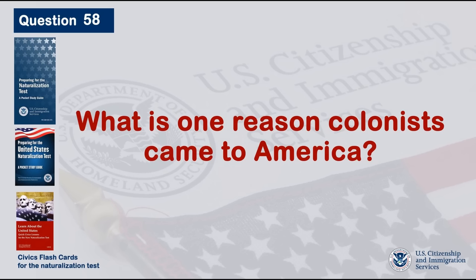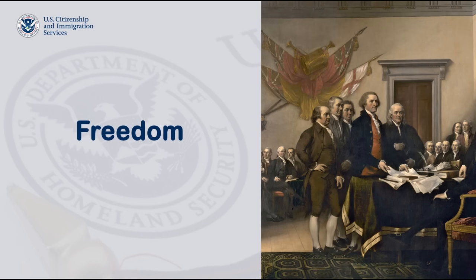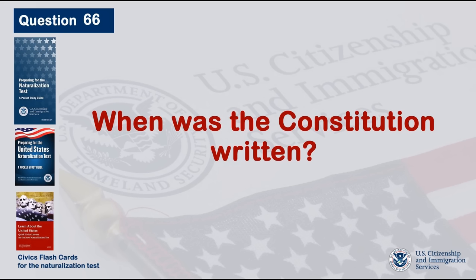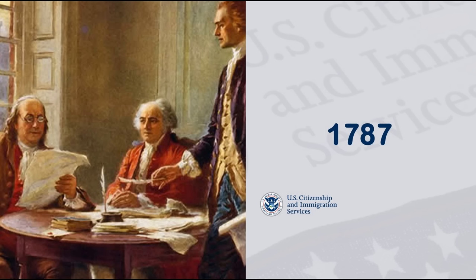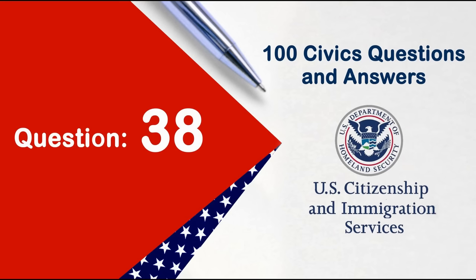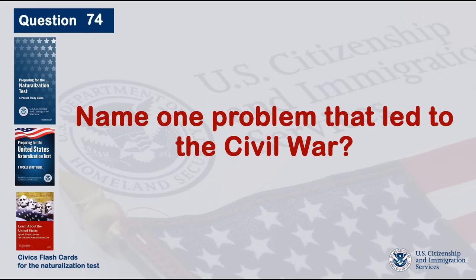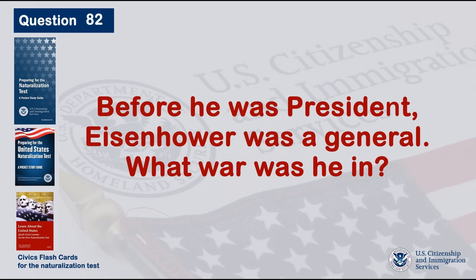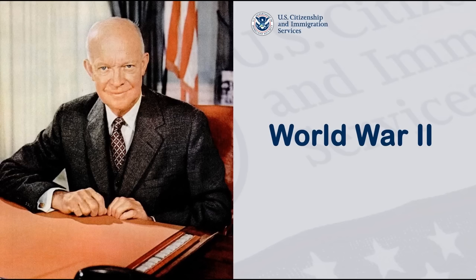What is one reason colonists came to America? Freedom. When was the Constitution written? 1787. Name one problem that led to the Civil War. Slavery. Before he was president, Eisenhower was a general. What war was he in? World War II.